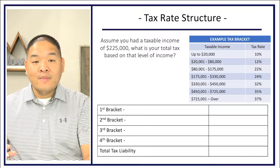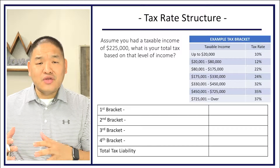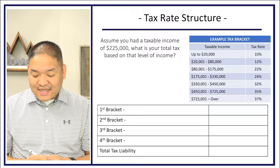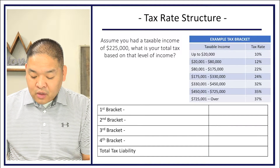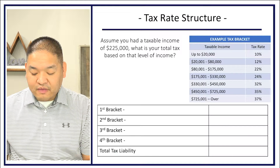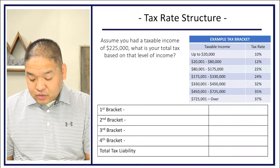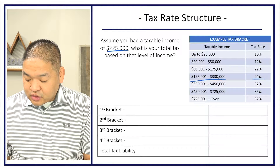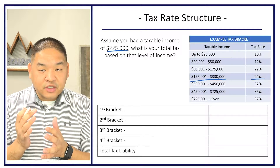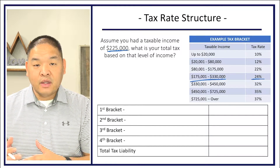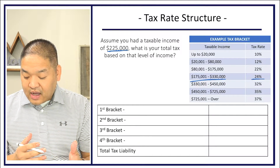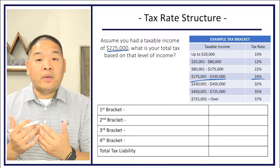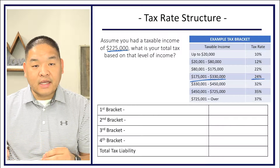Assume you have a taxable income of $225,000. What is your total tax? Based on that income level, $225,000 falls between $175,000 and $330,000, so we are in the 24% tax bracket. But it's not simply $225,000 times 24% — it's only the amount above $175,000 that is subject to 24%. The way I calculate is bracket by bracket, starting at the lowest.